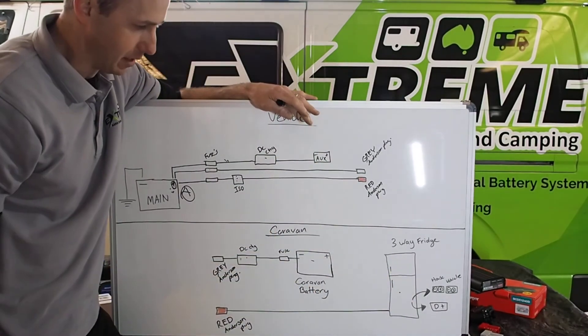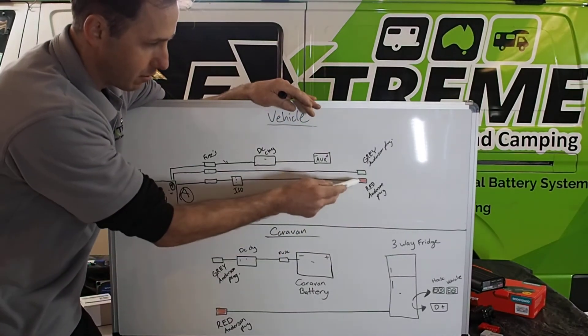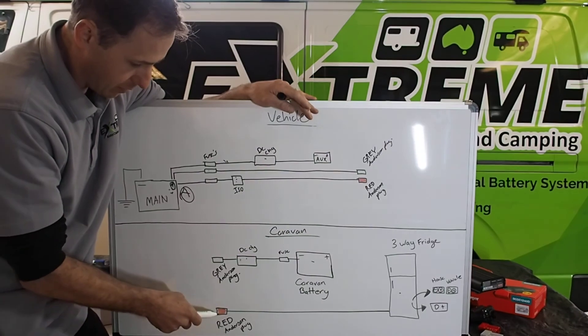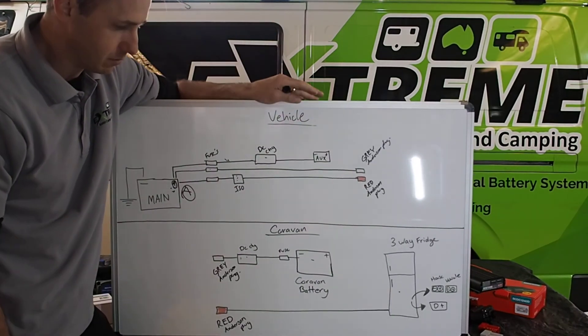That's just a D-plus wire for the automated fridge, but they always need an isolator for the fridge. So, red and grey on the rear of the vehicle, red and grey on the drawbar of the van. Simple. Works every time.